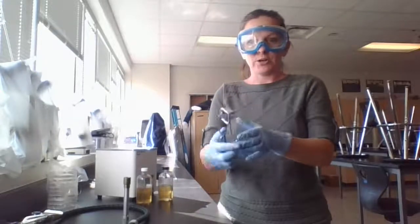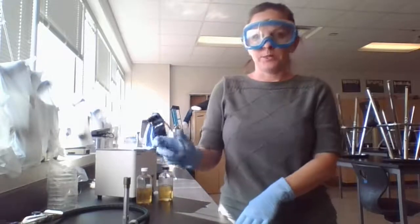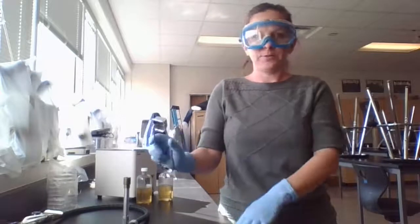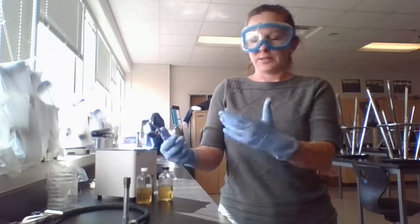All right. So this is called a striker. We're going to be using this to light our Bunsen burner. Basically what it does, it's got a little piece of flint and when you click it, it makes a spark.